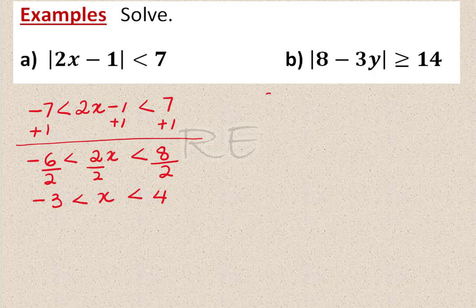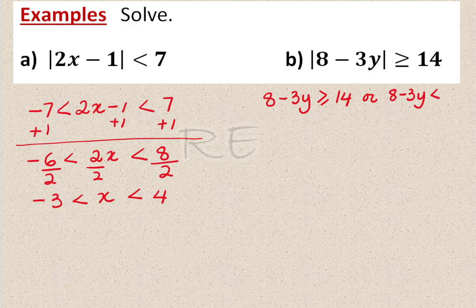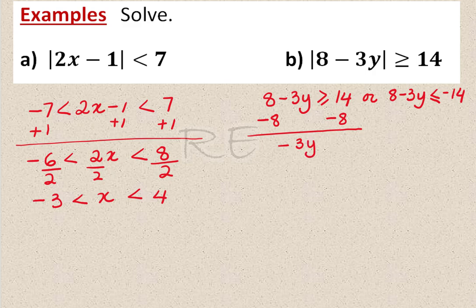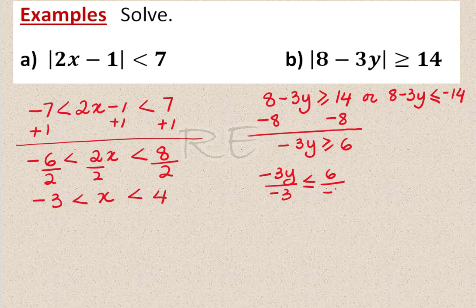The absolute value of 8 minus 3y is greater than or equal to 14. Using 'more is or', the first case is 8 minus 3y is greater than or equal to 14. Subtracting 8 from both sides gives negative 3y greater than or equal to 6. Dividing by negative 3 and reversing the inequality gives y less than or equal to negative 2.